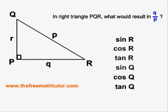Of these six, if we were to plug them into the SOHCAHTOA formulas, which one would give Q over P on the right side of the equals?